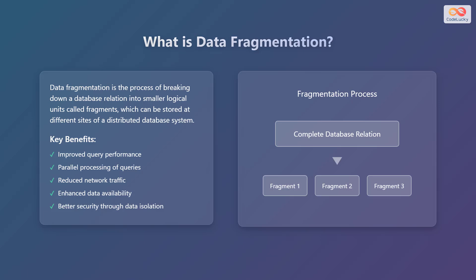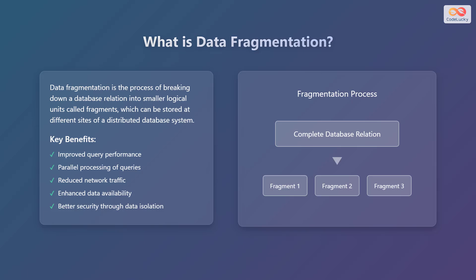Reduced network traffic: by storing data closer to where it's needed, we minimize the amount of data that needs to be transferred across the network. Enhanced data availability: if one site goes down, other sites still have their fragments available, ensuring continuous operation. Better security through data isolation: sensitive data can be stored in separate fragments with restricted access, protecting it from unauthorized users.